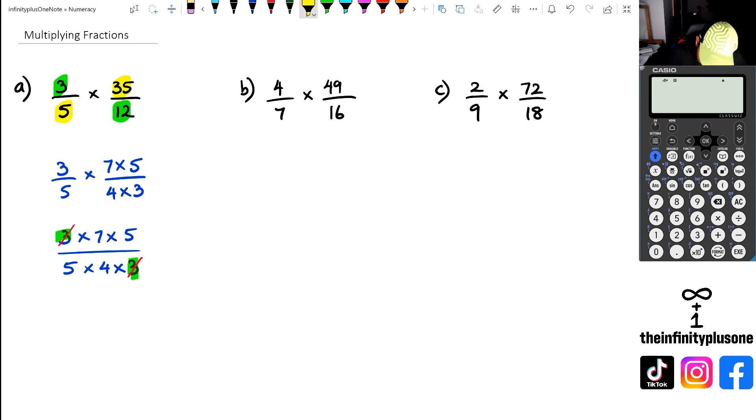Then you have 5 and another 5. Those are common factors as well. And of course, if you do 5 divided by 5, that's going to be 1. So I'm actually going to get rid of that. So what are we left over with? All we left over with is just 7 over 4.